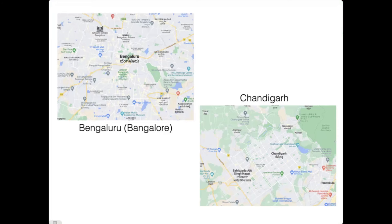Here's another example: two different cities in India, Bangalore and Chandigarh. These maps tell you something about how the city grew. For instance, in Bangalore you see a lot of streets that are curved—this does not look like a very planned city, it just kind of grew organically.